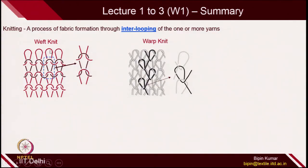Before I move, let's first revise what we covered so far in week 1. We came up with the basic definition of knitting, which is the process of inter-looping of yarns. We saw how the loop interacts inside the fabric structure. We came across 2 categories of knitting: one is weft knit and another one is warp knit. Warp knit we will cover later in this course.